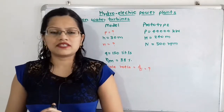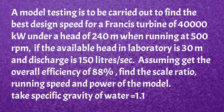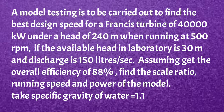Let us first understand the given question. A model testing is to be carried out to find the best design speed for a Francis turbine of 40,000 kilowatt under a head of 240 meters when running at 500 RPM. If the available head in the laboratory is 30 meters and discharge is 150 liters per second, assuming an overall efficiency of 88%, find the scale ratio, running speed, and power of the model.